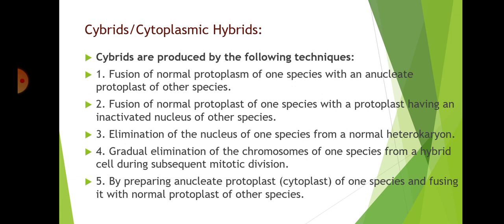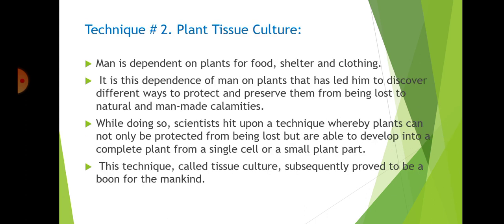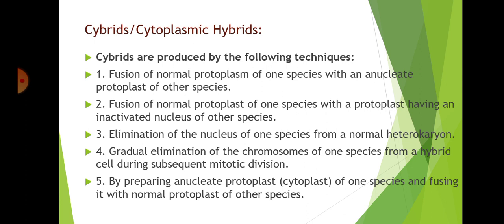A fifth technique is preparing an anucleate protoplast of one species and fusing it with a normal protoplast of another species. The objectives of cybrid production include: transfer of plastid genes of one species to the nuclear gene background of another species; preparing sexual incompatibility combinations; recovery of recombinants between parental mitochondrial or chloroplast DNA; and production of a wide variety of combinations of parental and recombinant chloroplasts with parental or recombinant mitochondria.